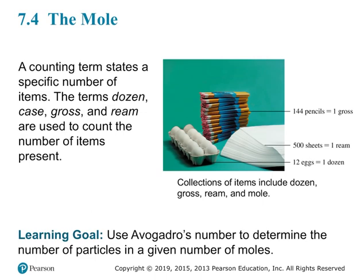We're going to start by talking about something called the mole — and this is not the animal. This is a quantity. The mole is actually similar to a dozen, which equals 12, or a gross, which equals 144, or a ream, which equals 500. These different terms are used to count objects. If you have a dozen eggs, you have 12 eggs; a ream of paper is 500 sheets; a gross of pencils is 144 pencils. We're going to use the mole in a similar way.